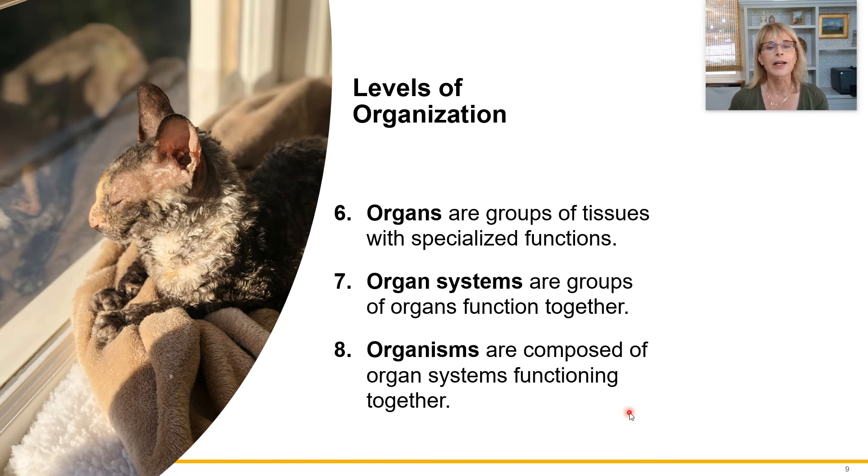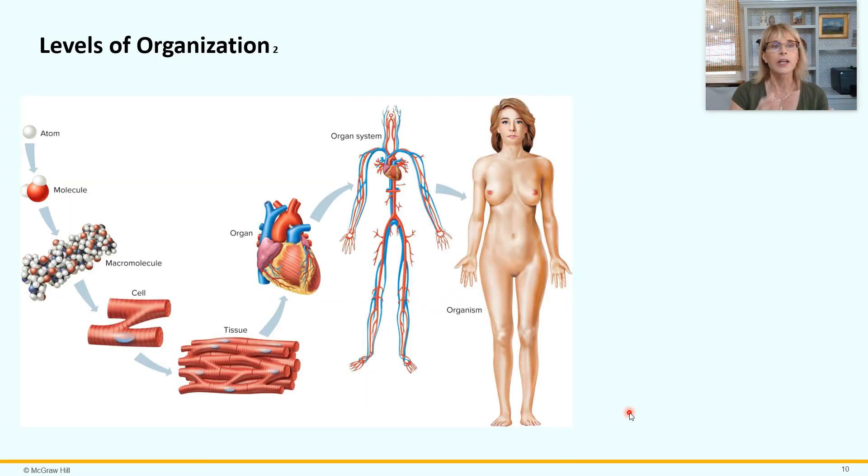And then we've got finally an organism. This is one of my little cats, Gidget. She's sick right now. I don't know if she's going to make it, but a good example of an organism. Humans are an example of an organism. Now learn these because in your very first exam, this will be one of the questions. What are the levels of organization? Make sure you can get them in order.